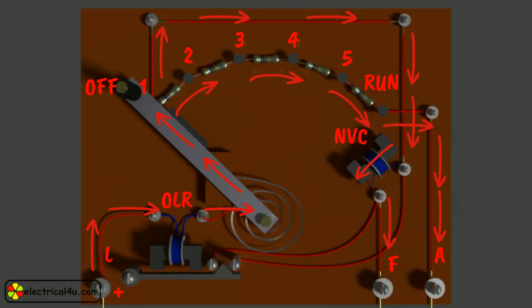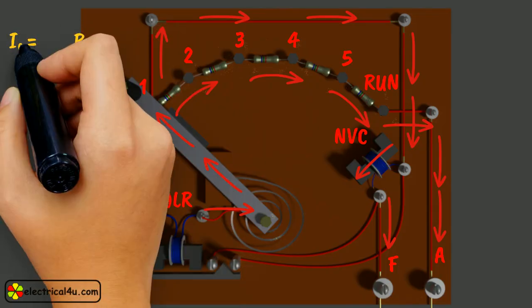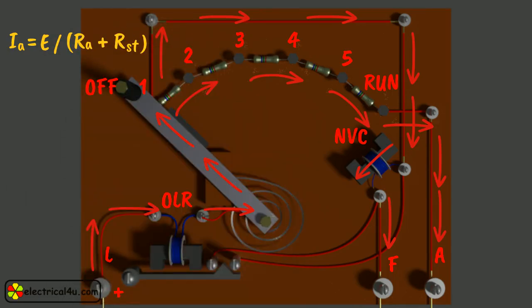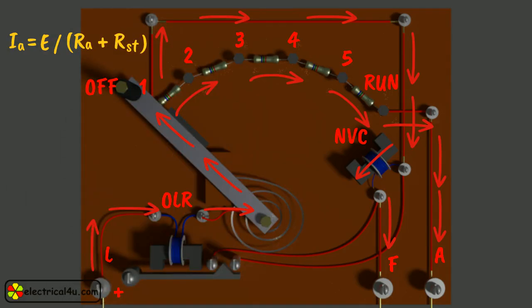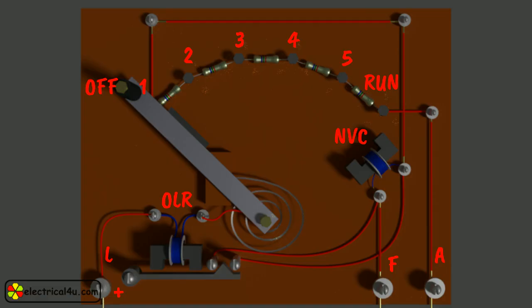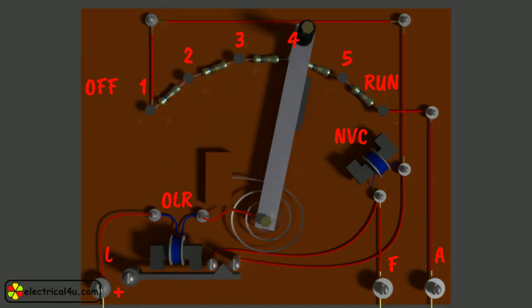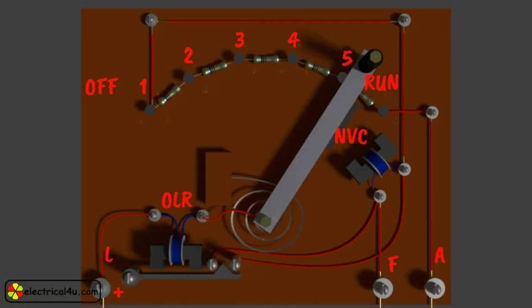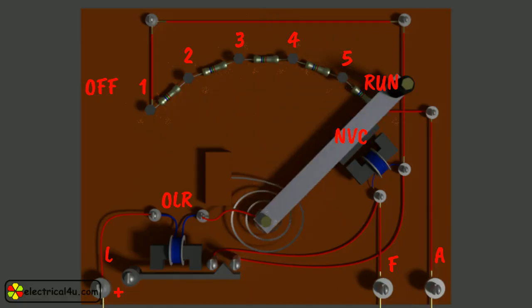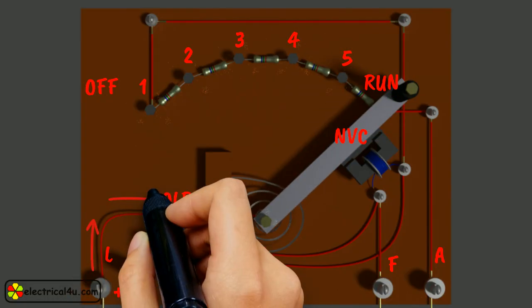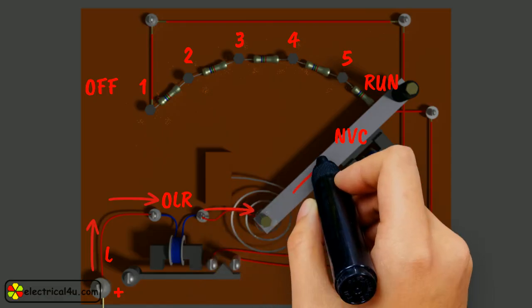The high starting armature current thus gets limited, as the current equation at this stage becomes IA equals E by RA plus RST. As the handle is moved further, it goes on making contact with studs 2, 3, 4, etc., thus gradually cutting off the series resistance from the armature circuit as the motor gathers speed.